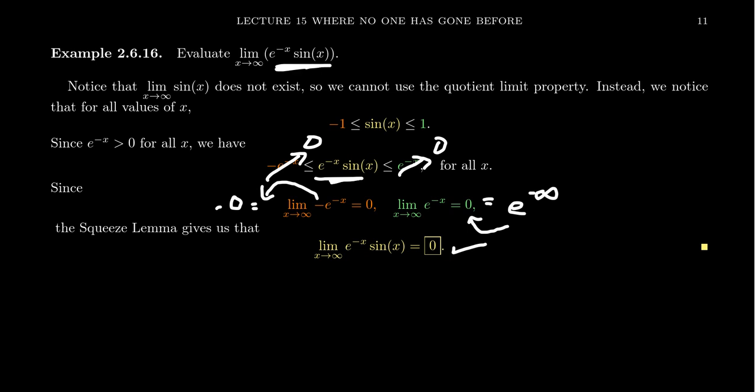And this function, e to the negative x times sine of x, is actually a very important function. It's sort of a representative of a function family. Because if you just take this function sine or cosine, you can use sines and cosines to model simple harmonic motion.